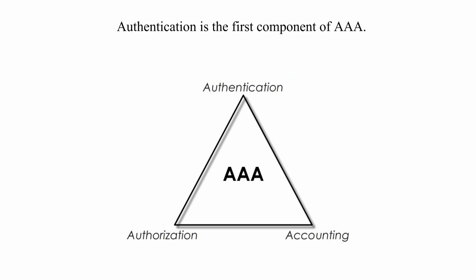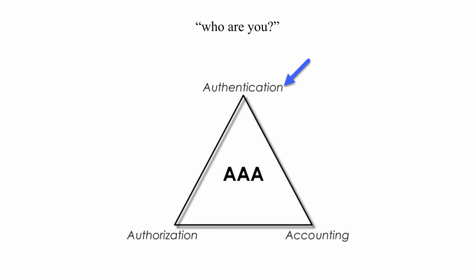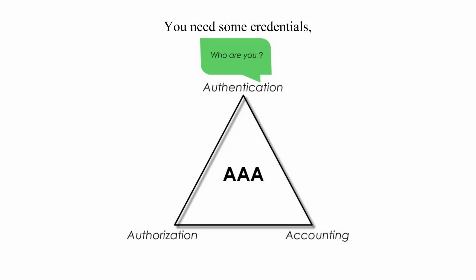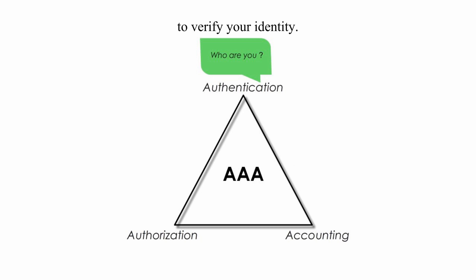Authentication is the first component of AAA. Suppose you are the user — it basically asks who are you. You need some credentials, normally username and password, to verify your identity.